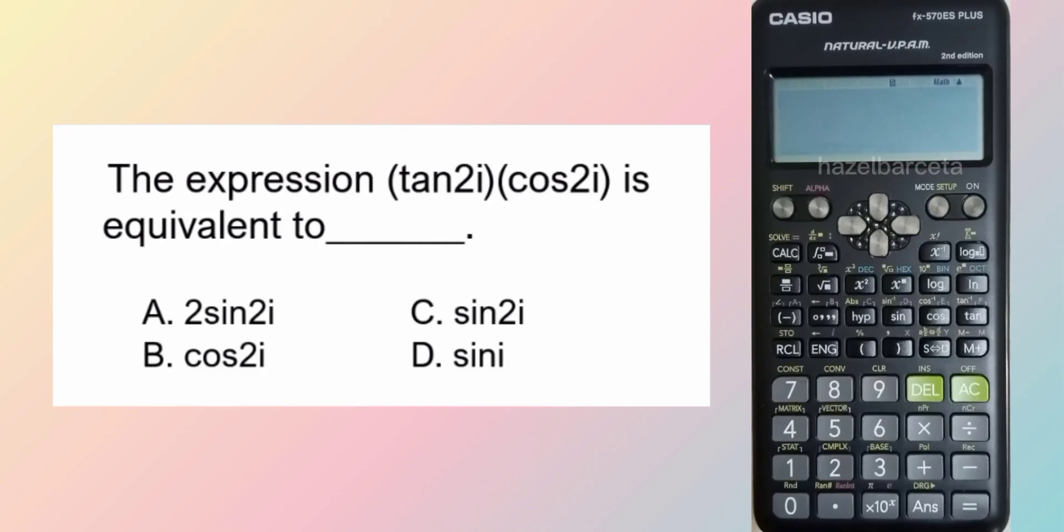The expression tangent 2i times cosine 2i is equivalent to. Do we need identities?